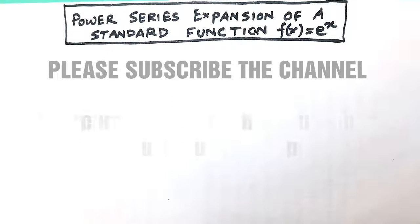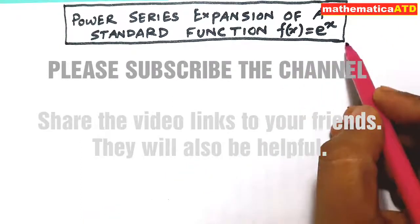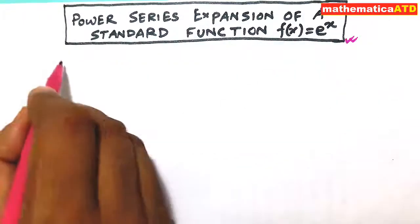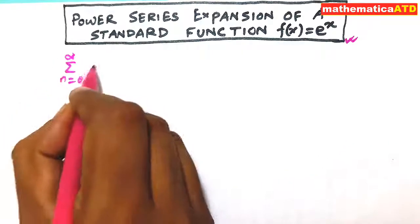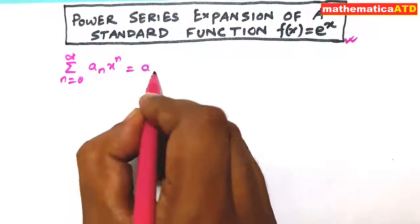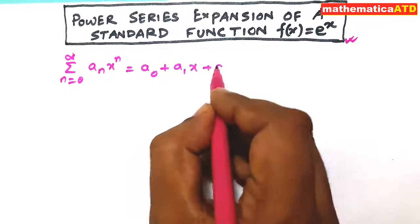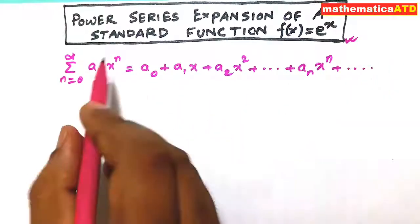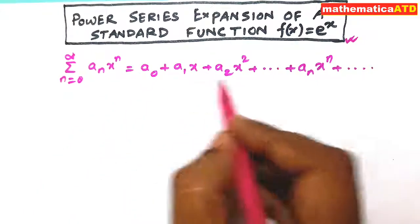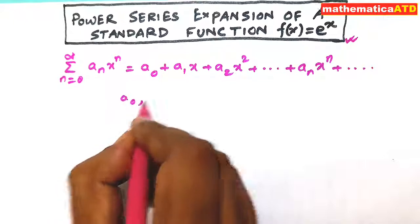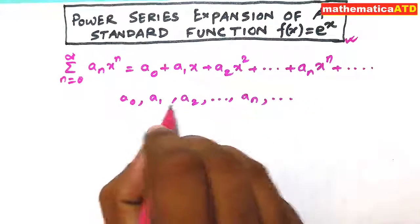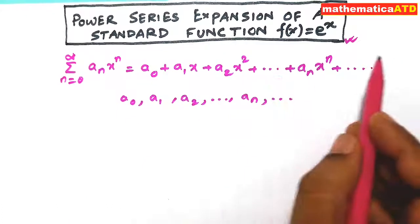Our topic is the power series expansion of the standard function f(x) = e^x. A series of the form summation n=0 to infinity of a_n * x^n, equal to a0 + a1*x + a2*x² + ... + a_n*x^n + ..., where x is a real variable and a0, a1, a2, a3, ..., a_n, and so on are all real constants. This series is known as the real power series.